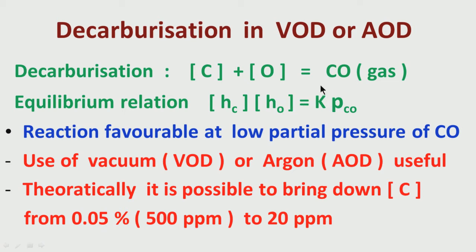The constant K depends on temperature — this is a thermodynamic factor — so at a particular temperature it is fixed. Therefore, if the partial pressure of carbon monoxide can be brought down, since K is constant at a particular temperature, the multiplication of the Henrian activity of carbon and the Henrian activity of oxygen — that is, the weight percent of carbon in solution multiplied by the weight percent of oxygen in solution — will also come down.